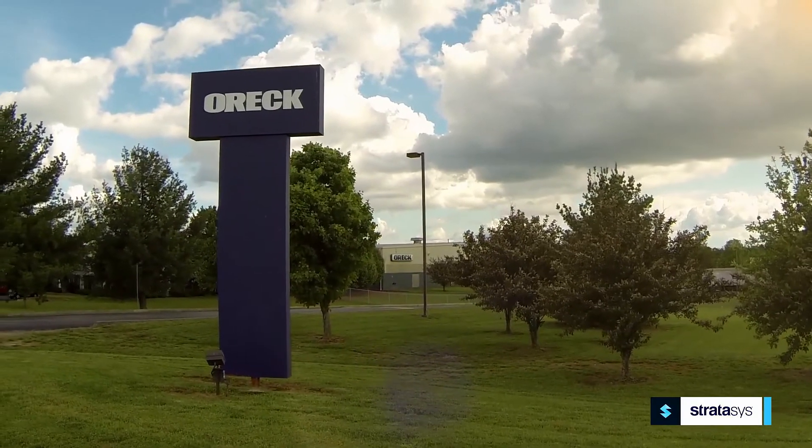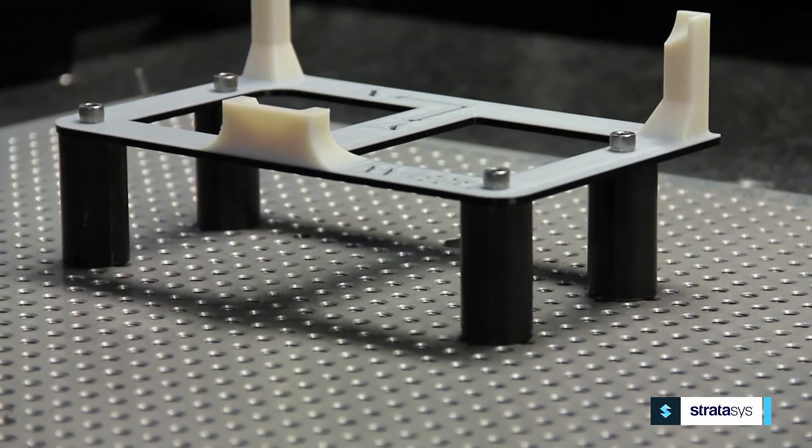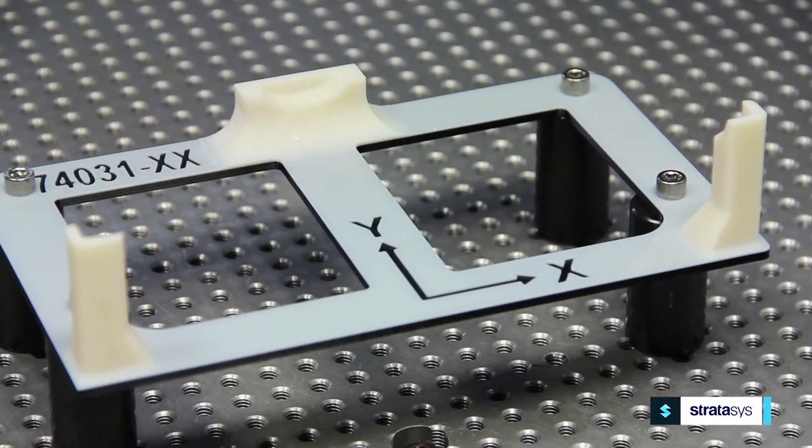OREC is one of the examples of our customers that's using 3D printing for inspection fixturing. Traditionally they were using urethane casting for their production of inspection fixturing, but once they started using 3D printing, they started making some serious resource gains.